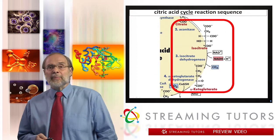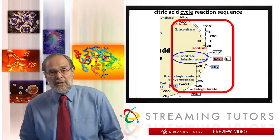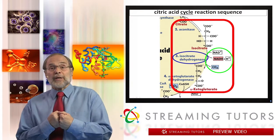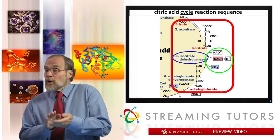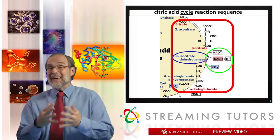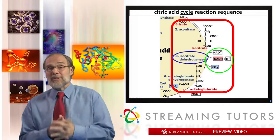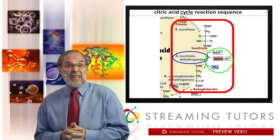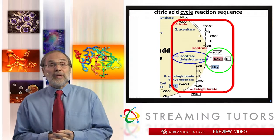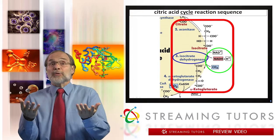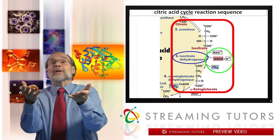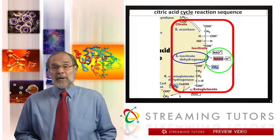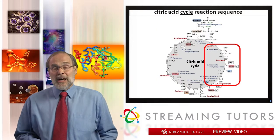The third step is catalyzed by isocitrate dehydrogenase. This enzyme does exactly what you'd expect: it extracts reducing potential from isocitrate. That reducing potential will go on to yield energy indirectly — think of reduced NAD as the equivalent of a couple of ATP molecules. The other thing isocitrate dehydrogenase does is release CO2, formally releasing reduced carbon in its oxidized form, driving the overall process forward.